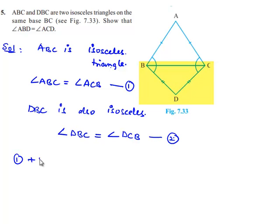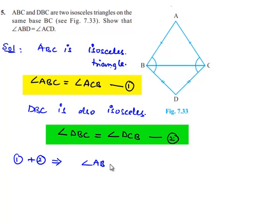Now by adding both the equations, we get angle ABC plus angle DBC is equal to angle ACB plus angle DCB.